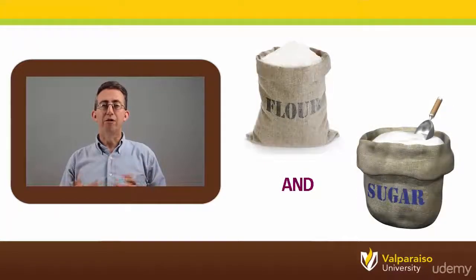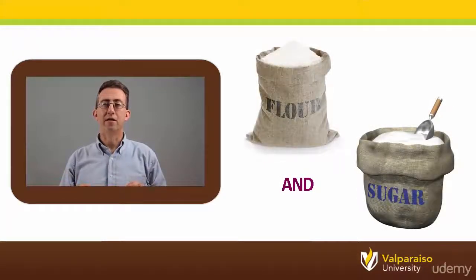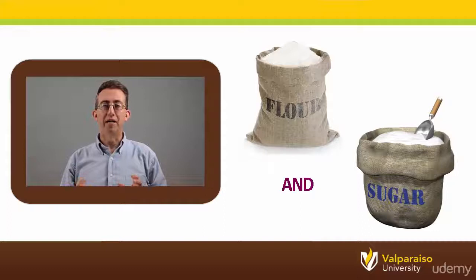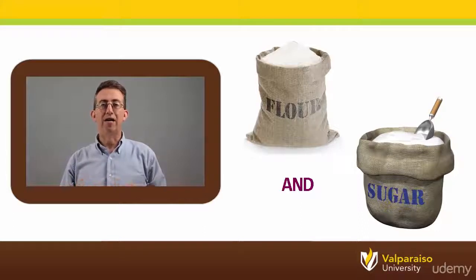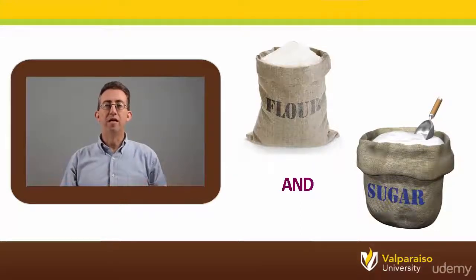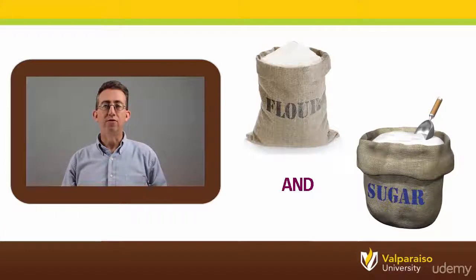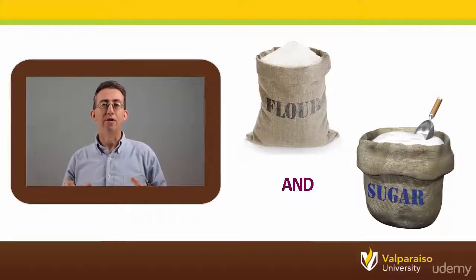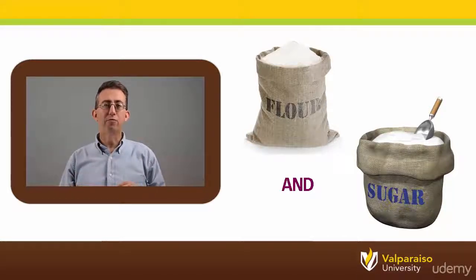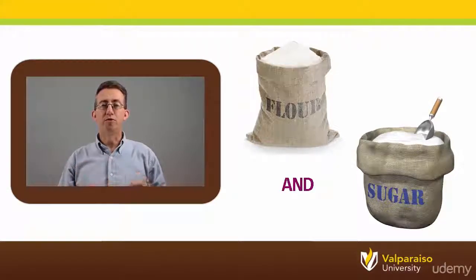The first operator we will look at is AND. Imagine that you wanted to bake a cake. The recipe called for both flour AND sugar. You would need to use both of these ingredients or else the cake would not turn out properly. If you're missing one or both of them, you would most certainly not get a completed cake. The AND operator will work just like that. It will tell us when something requires two or more inputs.